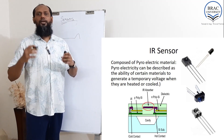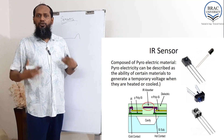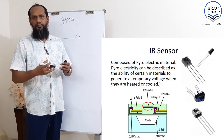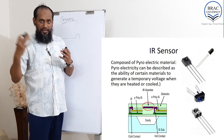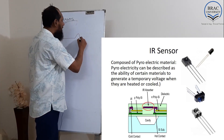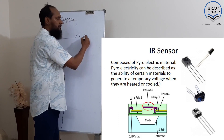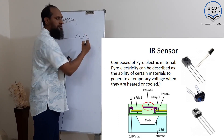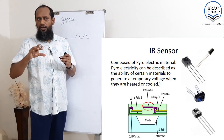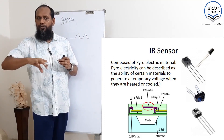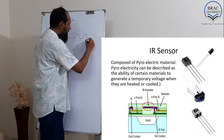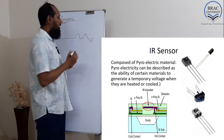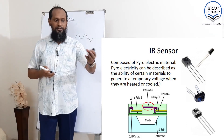If some other object comes — an animal, a human being, or some fire — the infrared coming from that thing will make the voltage rise again. After some time, it will return to normal position. If a heated thing goes out of the room, the signal will go down and then become the normal position. That is the concept.